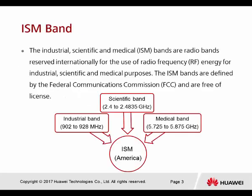ISM band stands for Industrial, Scientific, and Medical. This band was defined by the FCC. For the industrial band, it ranges from 902 to 928 MHz. The scientific band, which includes Wi-Fi 2.4, ranges from 2.4 to 2.4835 GHz. The medical band uses 5.725 to 5.875 GHz.